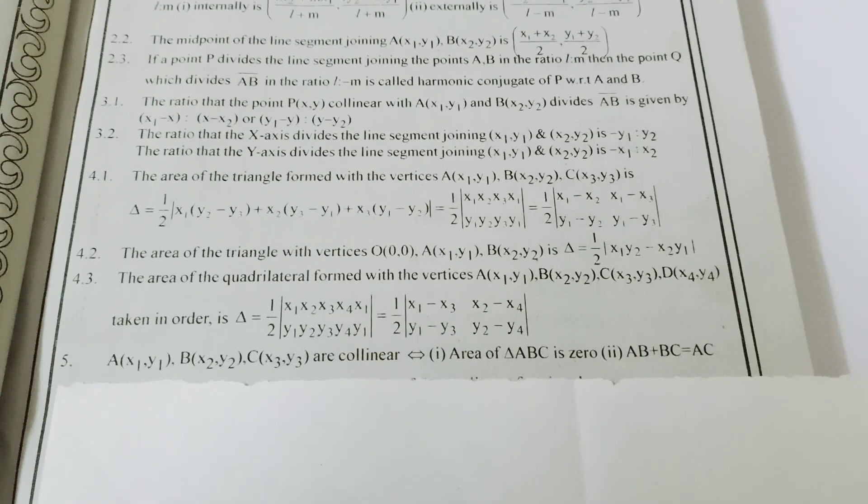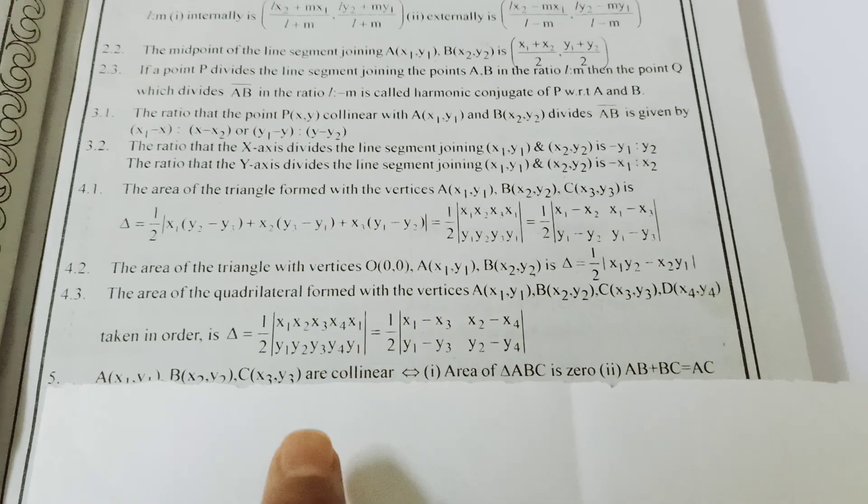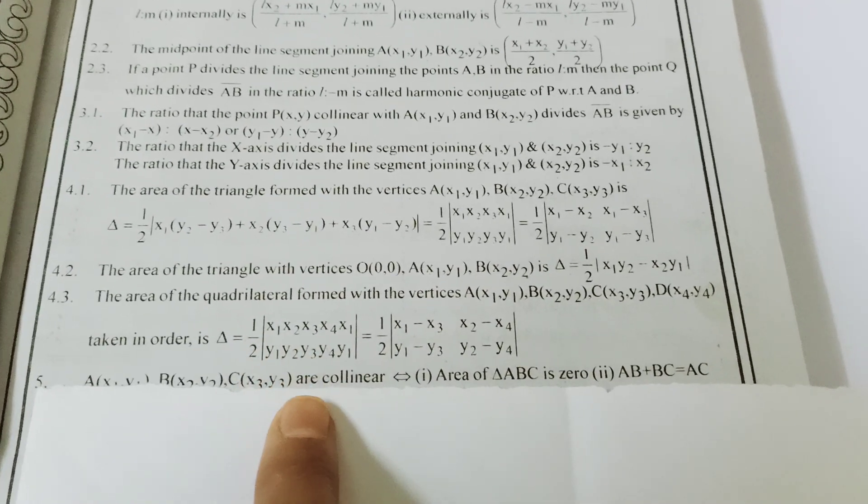From the origin: half of (x1 minus x2)(y1). Next, quadrilateral area formula.